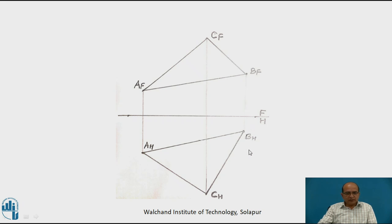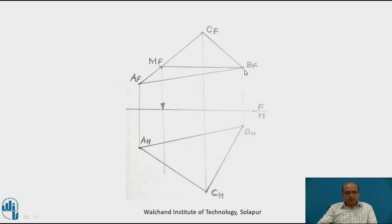From the front and top views, we will find the true shape of the plane, and from that we can measure the perimeter. The first step for getting the true shape is to obtain the edge view of the plane. For the edge view, we must have a true-length line in either the front view or the top view. Suppose we want the true-length line in the top view. From point BF in the front view, we draw a line parallel to the reference line FH, intersecting AC at point MF. This makes line BF-MF parallel to FH, indicating true length in the adjacent view, giving line BH-MH in the top view.